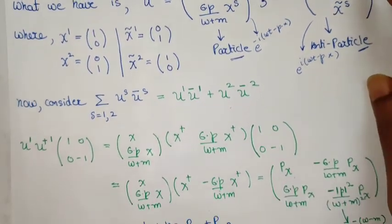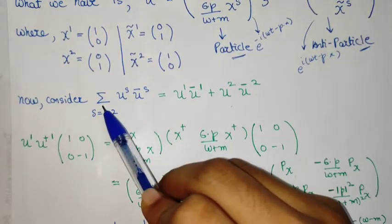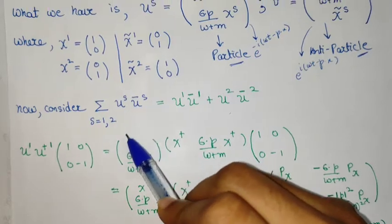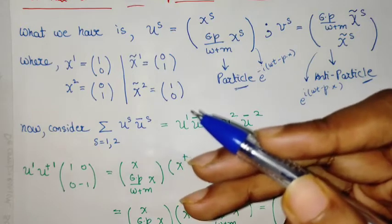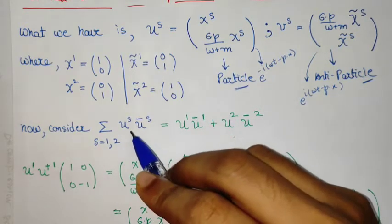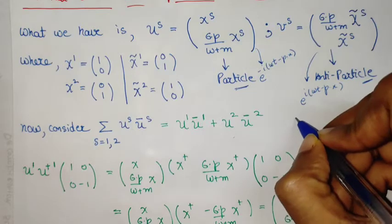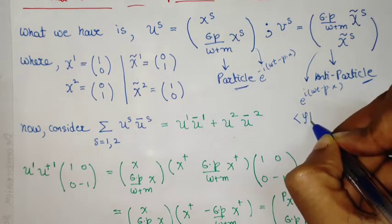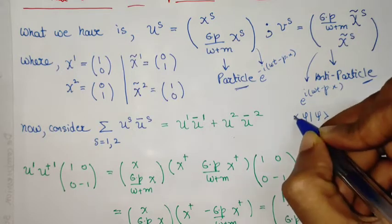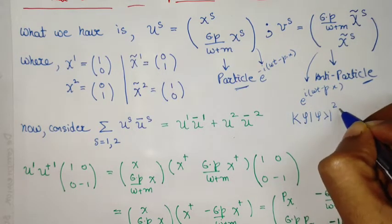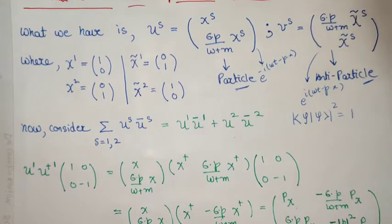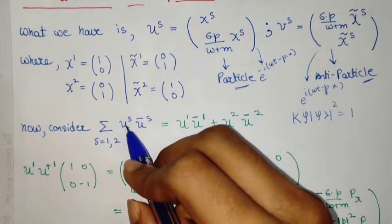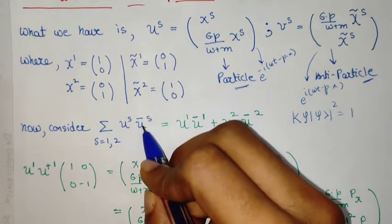Now proceeding, we will try to calculate this sum that I am showing here. You are summing over the linearly independent particle solutions. This is almost like a normalization. In quantum mechanics, we have psi psi and then we take mod square and say it is equal to 1. We are doing some sort of a u, u dagger normalization.